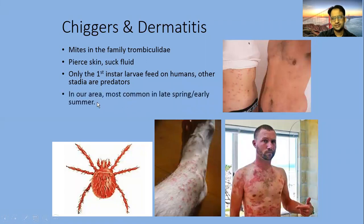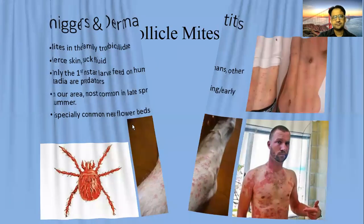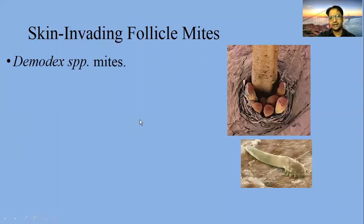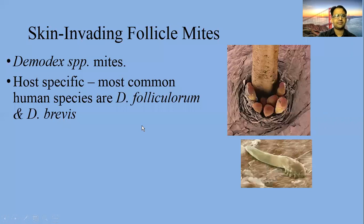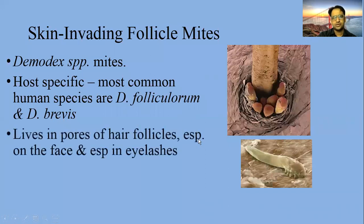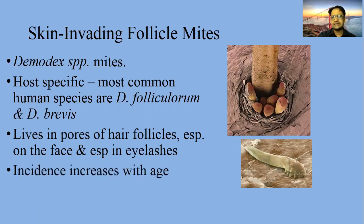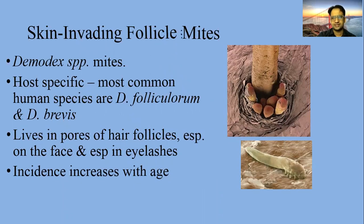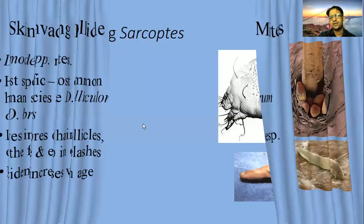Chiggers are most common in late spring and early summer in our area, though this will vary depending on environmental conditions. They are especially common near flower beds. Skin-invading follicle mites include Demodex species. The most common human species are Demodex folliculorum and Demodex brevis. They are usually found in hair follicles, especially on the face and particularly on the eyelashes.